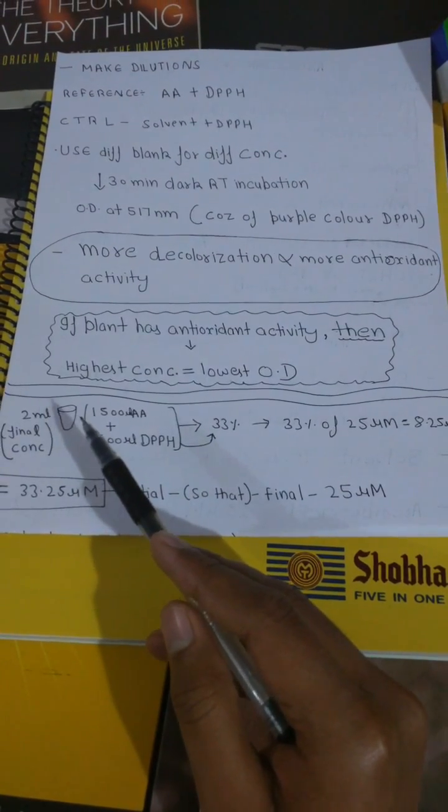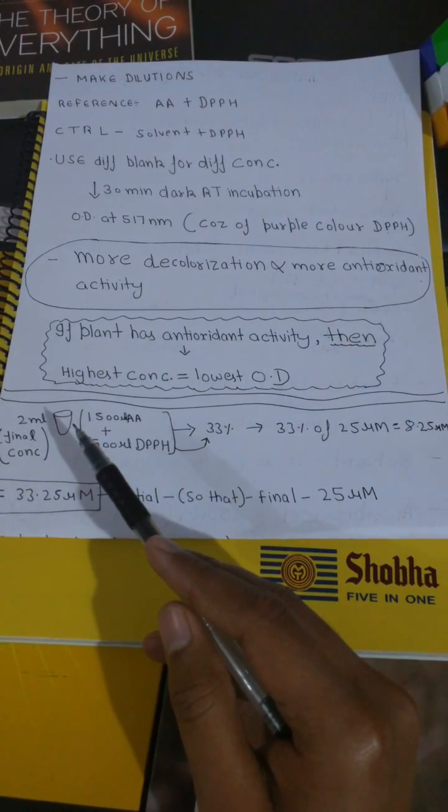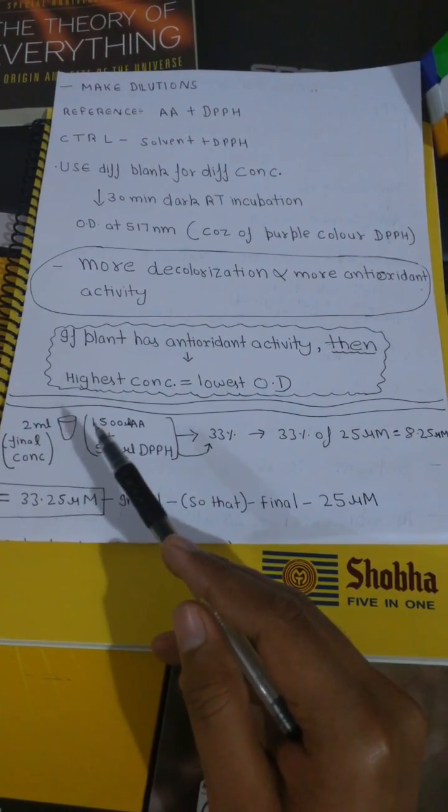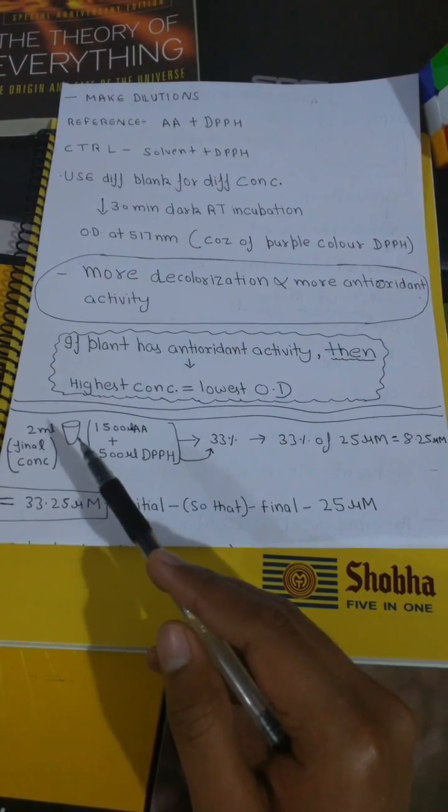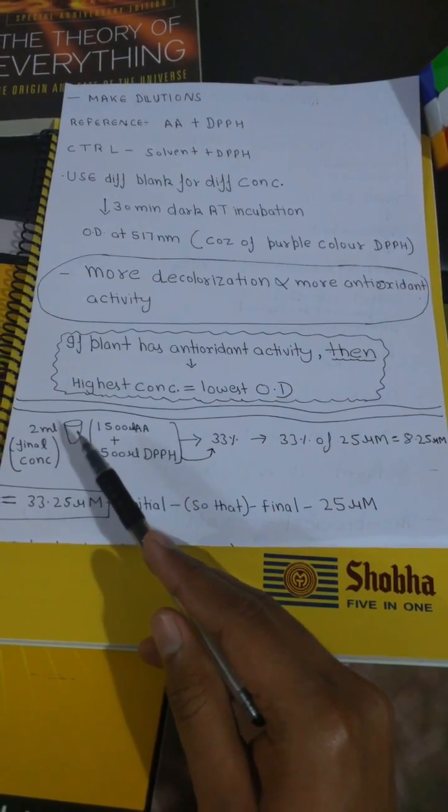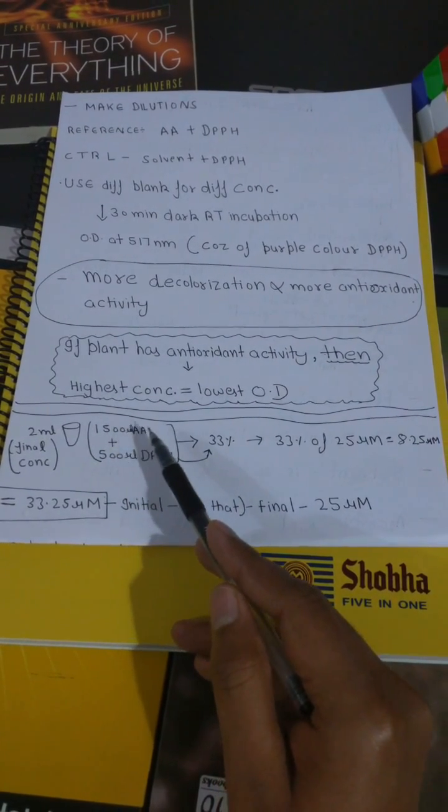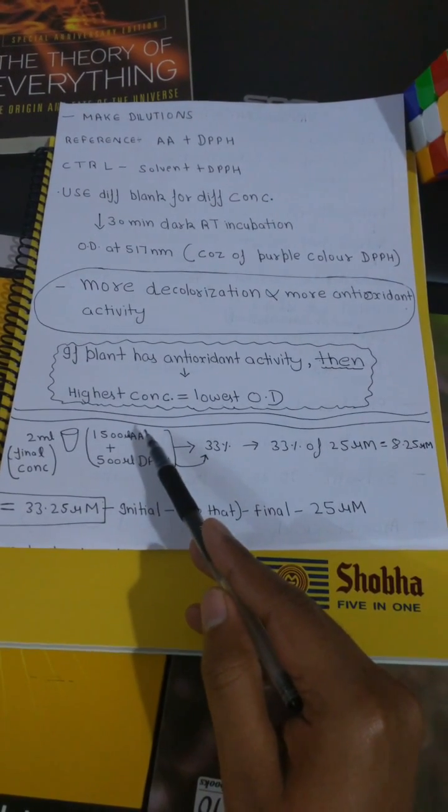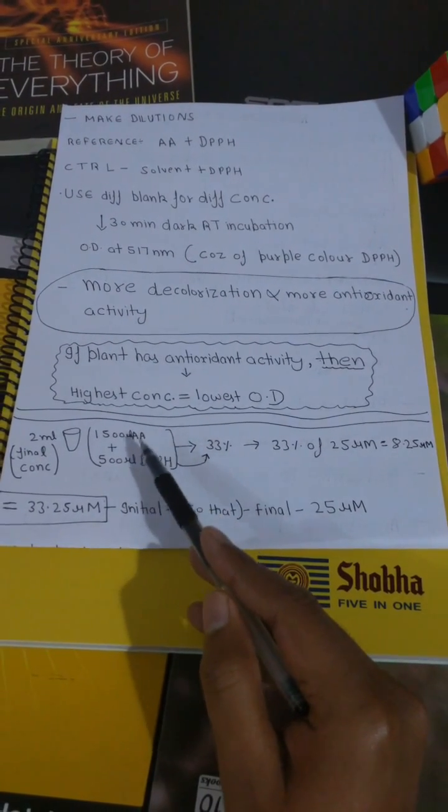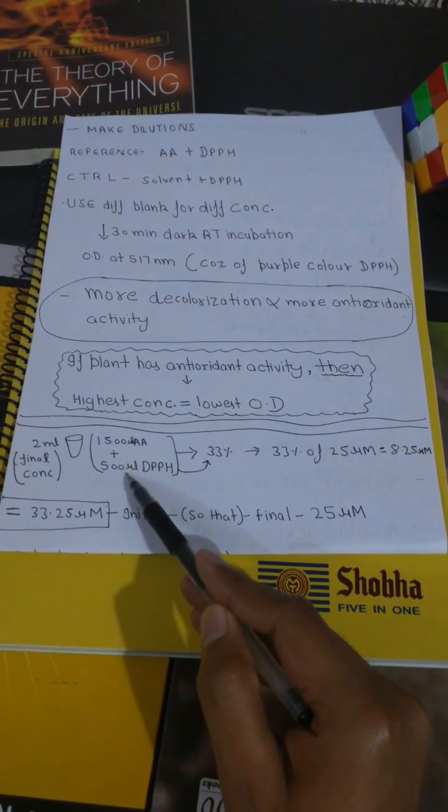Remember guys, in the last page I told you that we are going to use 25 micromolar of ascorbic acid and that it was its end concentration. What I meant by that, I'm going to tell you about. Suppose we are using 2 ml of vial in which we put 1500 microliter of ascorbic acid plus 500 microliter of DPPH. This ascorbic acid that we are using is 25 micromolar, but after putting this additional 500 microliter its concentration will get decreased.